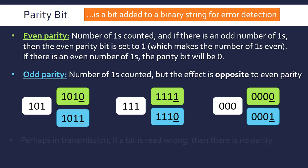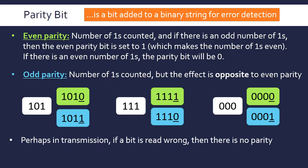In terms of how this actually helps with error detection, if perhaps during transmission a bit is read wrong—a 0 is read to be a 1 or vice versa—then there's no parity. Parity just in general means being equal, and if a single bit is read wrong, there's no parity because the parity bit doesn't match up with the rest of the data.